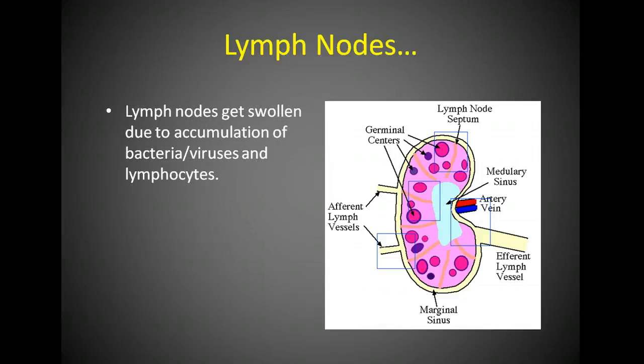Why do lymph nodes get swollen? Most of the time it's because they're doing their job. If there are bacteria and viruses present, the immune system's white blood cells will induce an attack, attracting more white blood cells to that lymph node. So swollen lymph nodes tell you there's an infection going on, but also that the body is fighting it off.